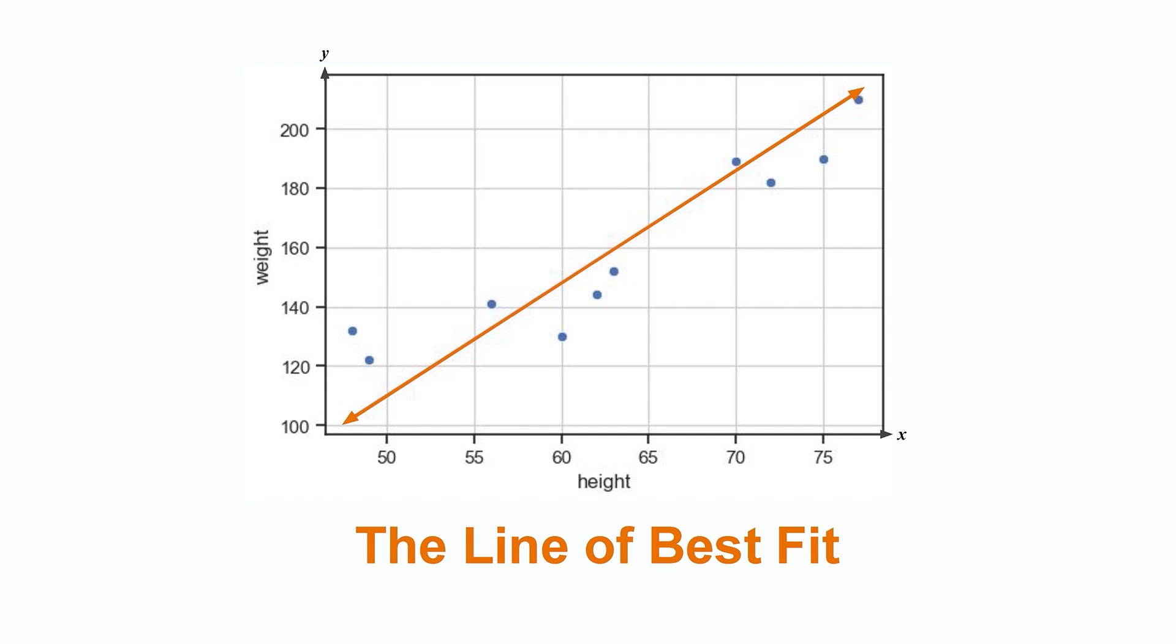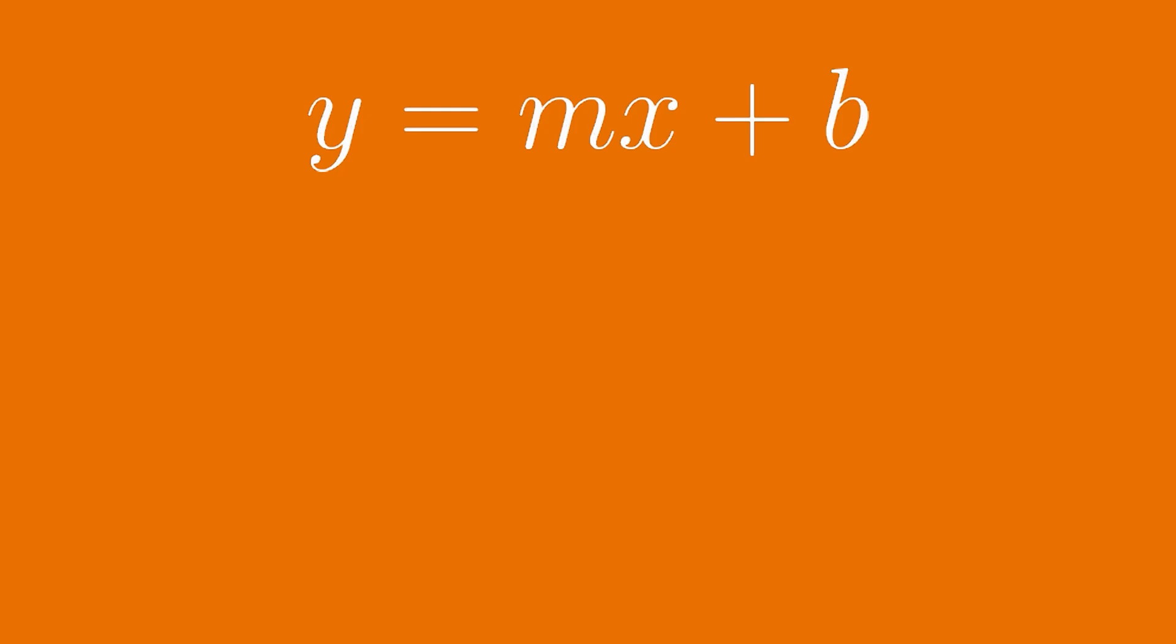So how do we find the line of best fit for a data set? Well, just like before, one way is to simply plot the data and then manually draw a line through the center of the data. We remember that we can write the equation of any line as y equals mx plus b,